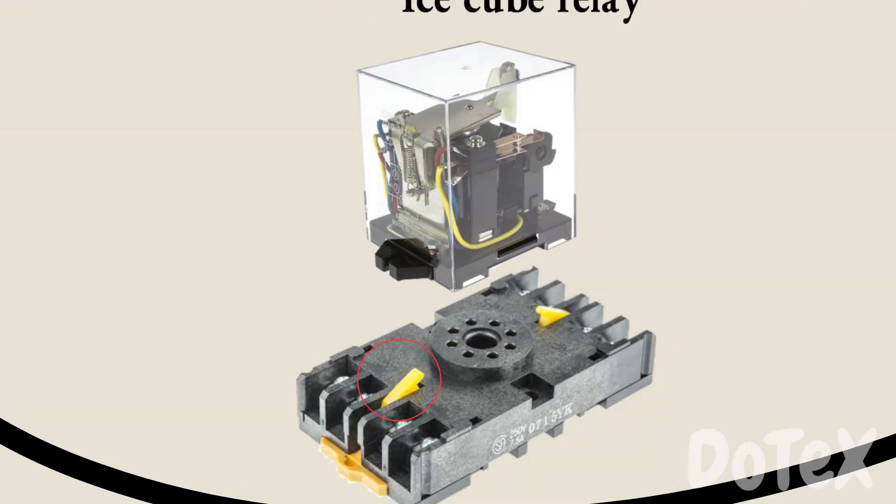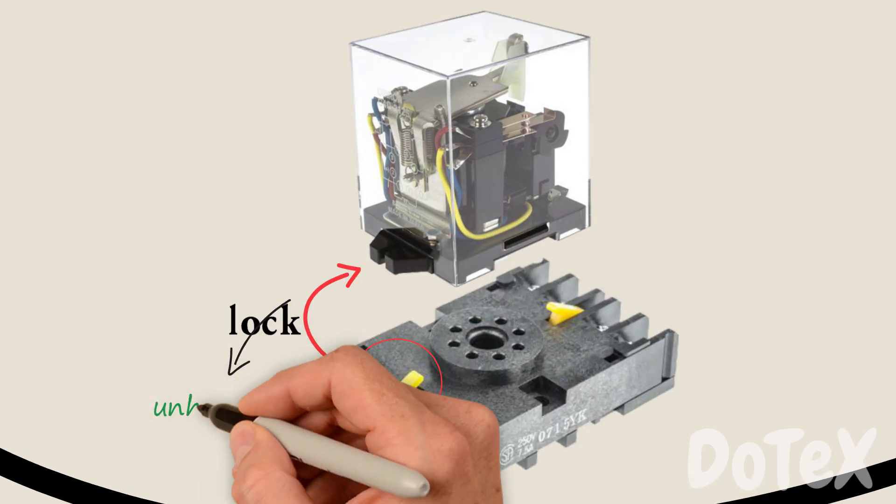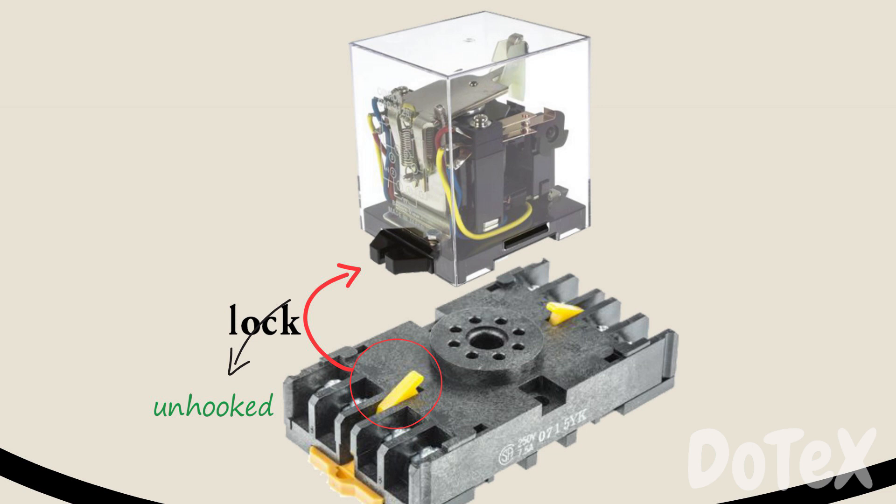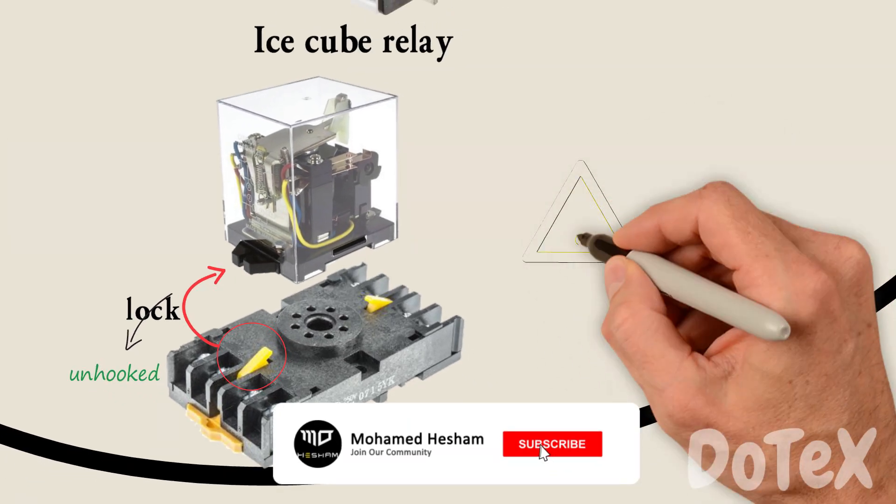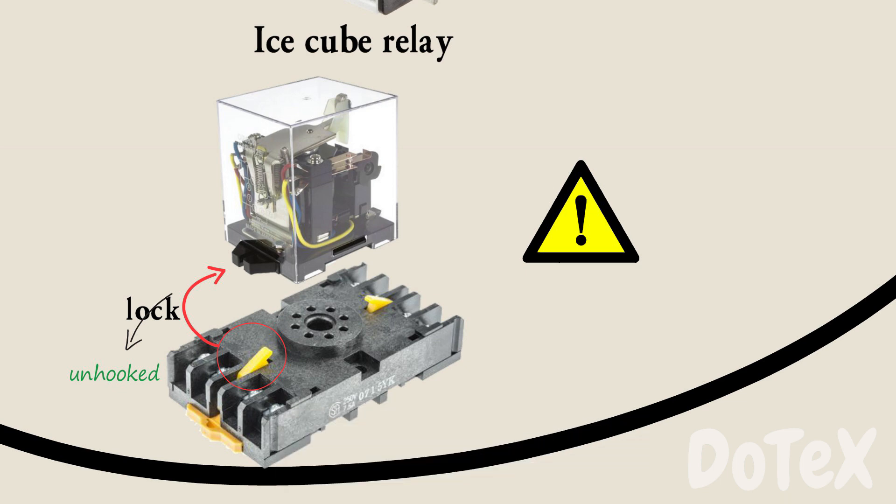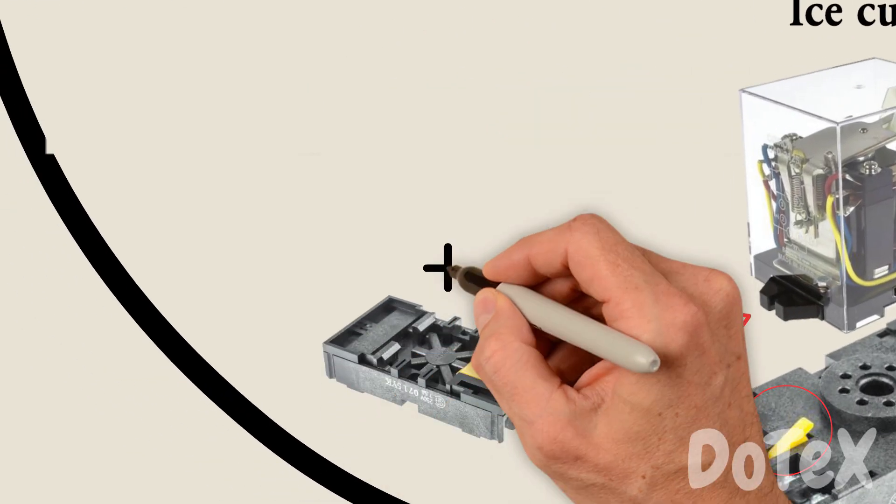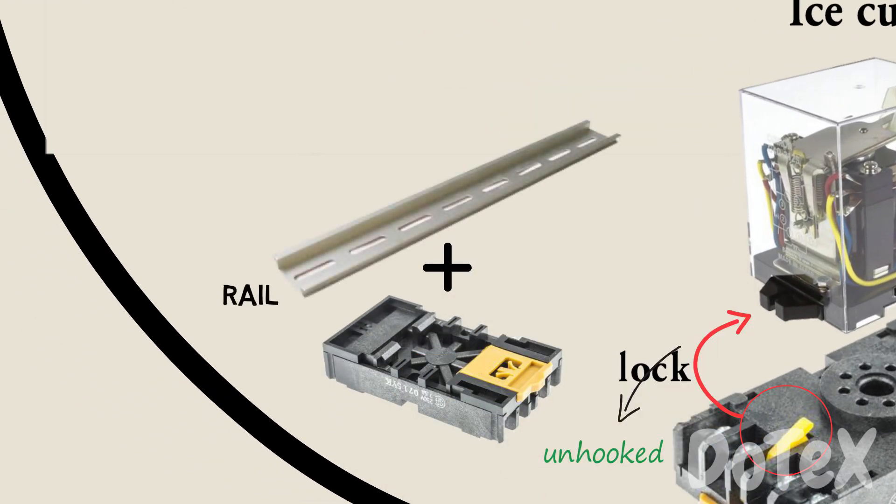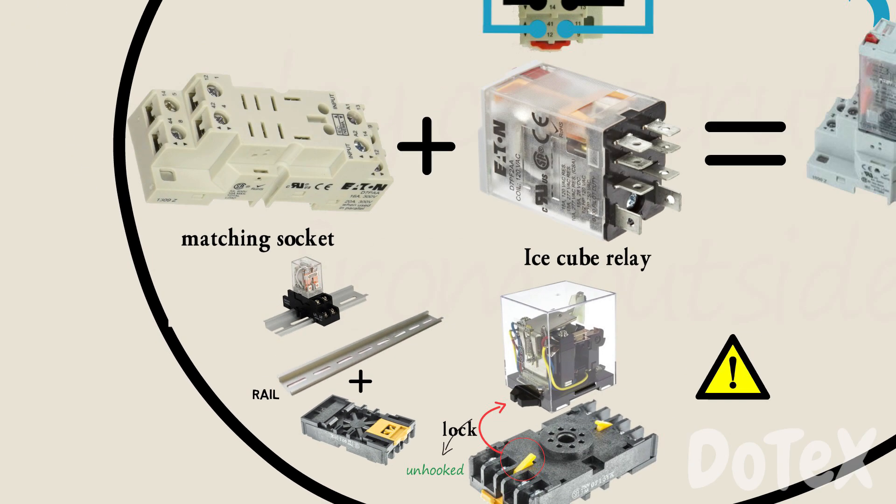Sometimes plastic hooks lock the relay into the base and it must be unhooked for the relay to be removed. Be careful to not damage a plug-in relay when you remove it from a socket. The back of the base is usually fixed into a rail like this.